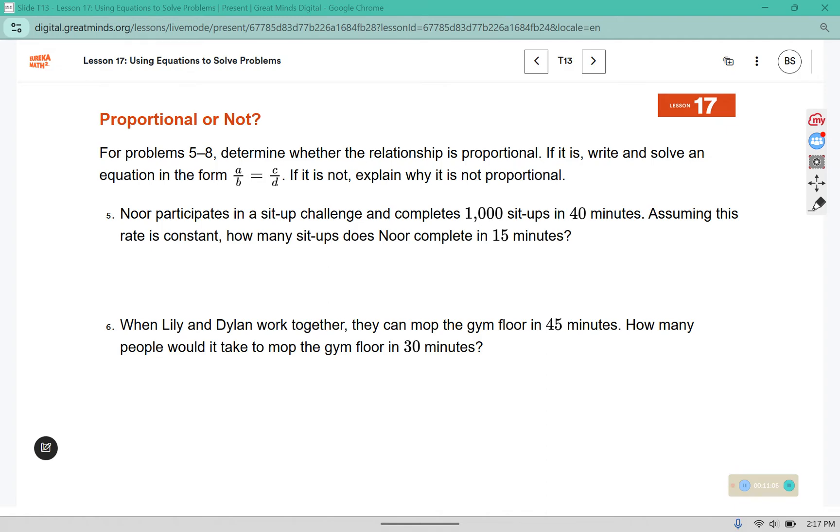For problems 5 through 8, determine whether the relationship is proportional. If it is, write and solve an equation in the form, again, we're going to use the format y equals kx. If it is not, explain why it's not proportional. Noor participates in a sit-up challenge and completes 1,000 sit-ups in 40 minutes. Assuming this rate is constant, how many sit-ups does Noor complete in 15 minutes? That rate there is the key to tell us if it's proportional or not.